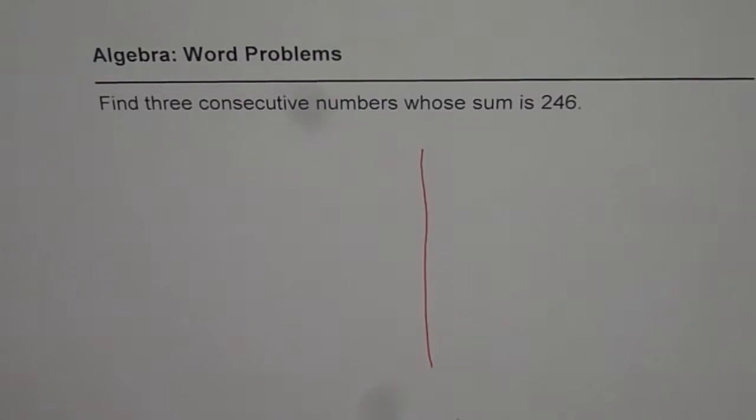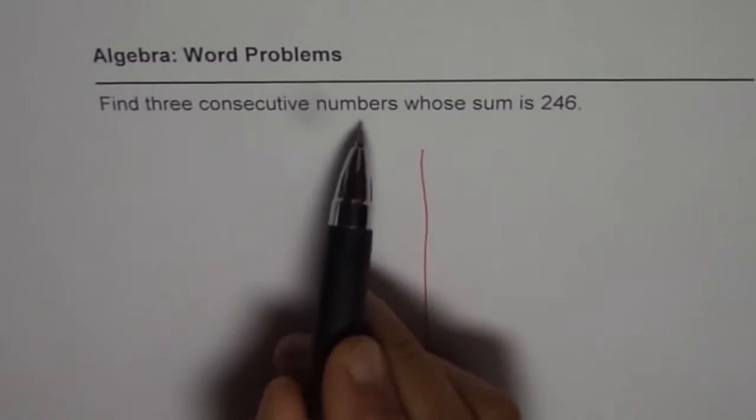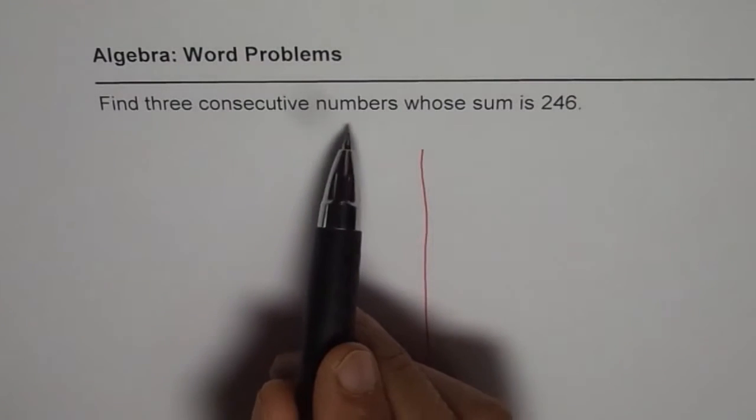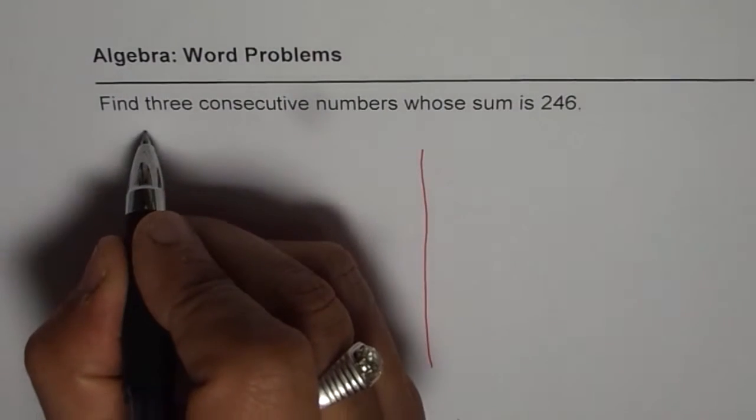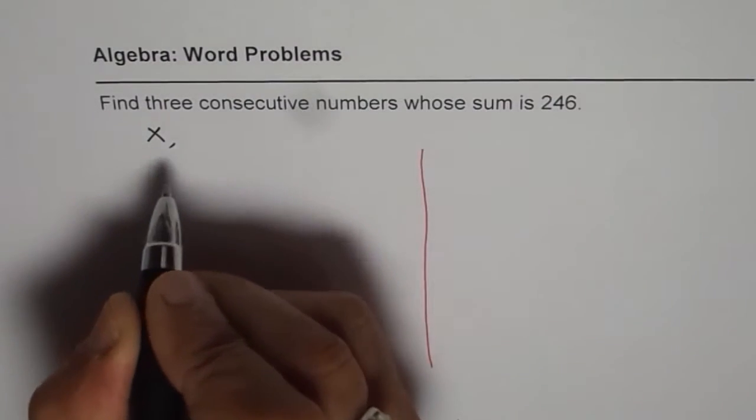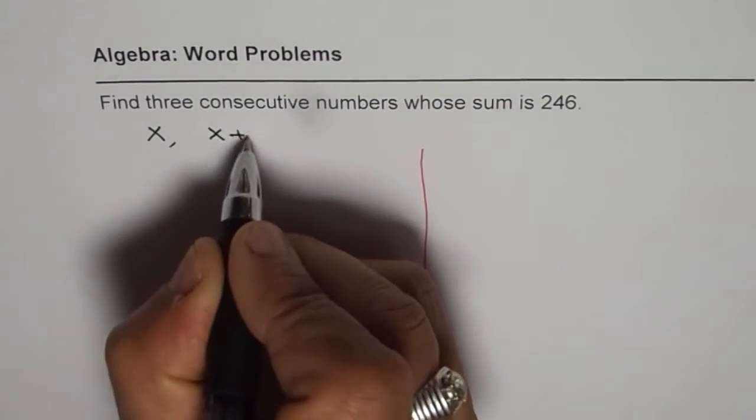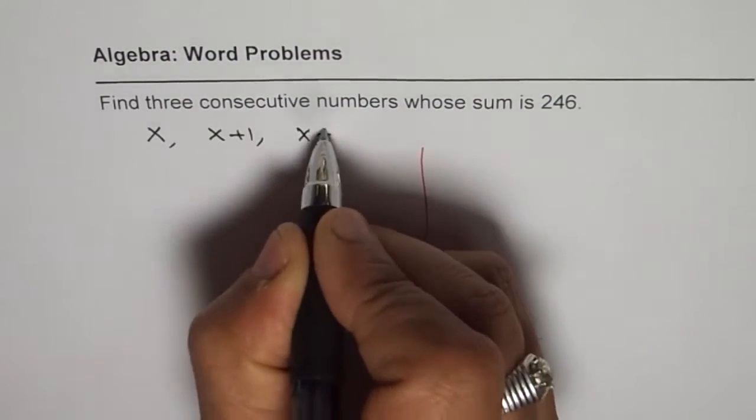Very simple, straightforward question. Now, what are consecutive numbers? Numbers which come together like 2, 3, 4, 5, 6, 7. So, if x is one of the numbers, then the next number should be x plus 1 and next should be x plus 2.